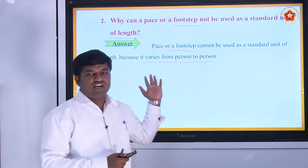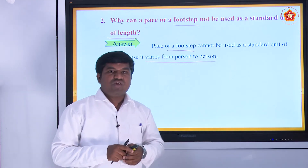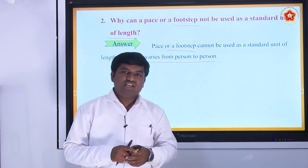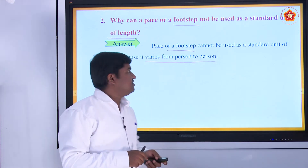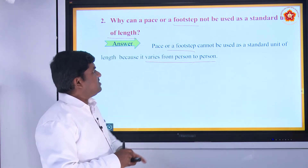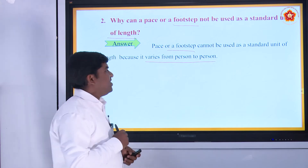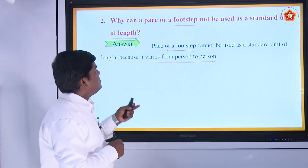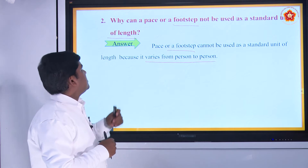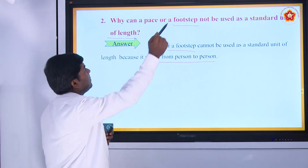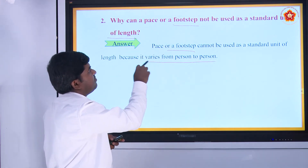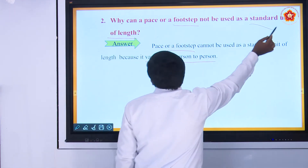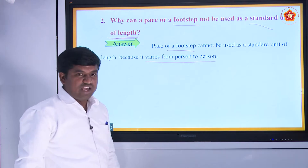I told about conventional methods — footstep, cubit — those lengths vary from person to person. So footstep is also a conventional method of measurement that varies from person to person. Therefore, we cannot use that measurement as a standard unit of length.